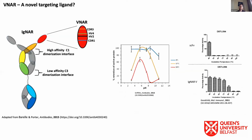So what are we going to use to target this? We're looking at using a VNAR, which is a potentially novel targeting ligand. Despite having evolved around 400 million years ago, sharks possess an adaptive immune system, and as part of this, they possess an unusual protein class known as IgNARs. The most striking feature is the fact that they lack a light chain. These VNARs are single-chain domains that can be reasonably easily expressed in bacterial systems — which is handy because you don't really want to be immunizing sharks very often. If we've learned anything from Jaws or Sharknado, that's what you don't want to be doing.